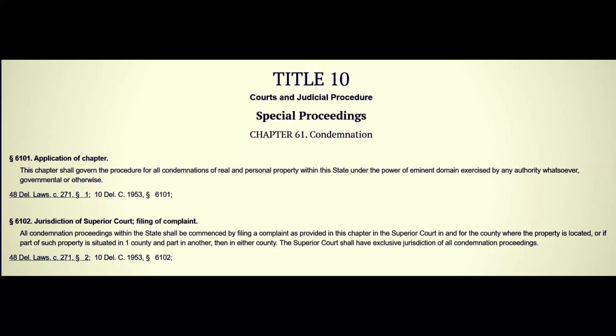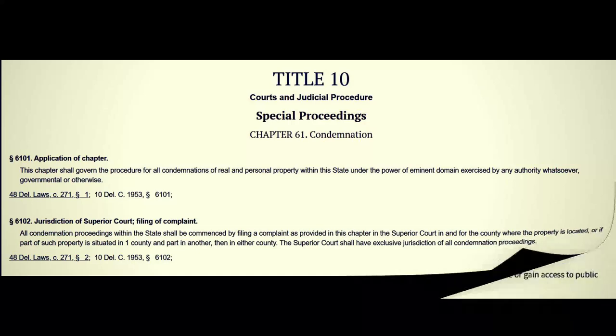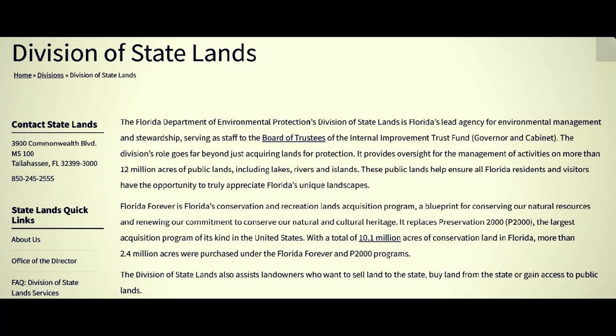Jurisdiction of Superior Court — filing of complaint: all condemnation proceedings within the state shall be commenced by filing a complaint as provided in this chapter in the Superior Court in and for the county where the property is located, or if part of such property is situated in one county and part in another then in either county. The Superior Court shall have exclusive jurisdiction of all condemnation proceedings — like how they always declare their jurisdiction as the supreme law of the land apparently.